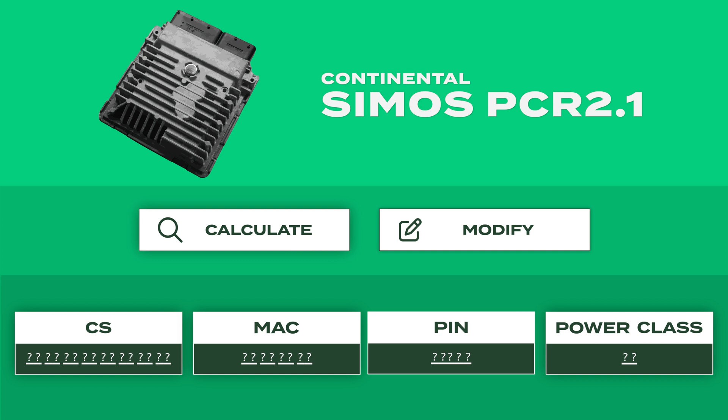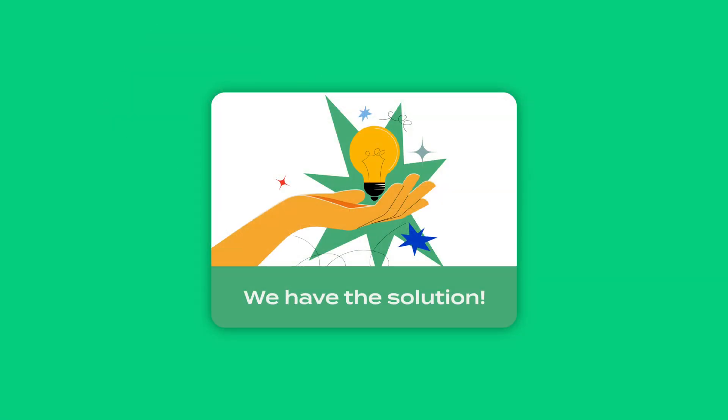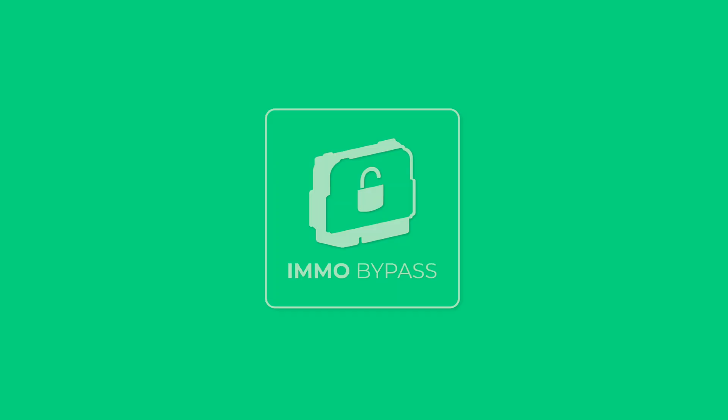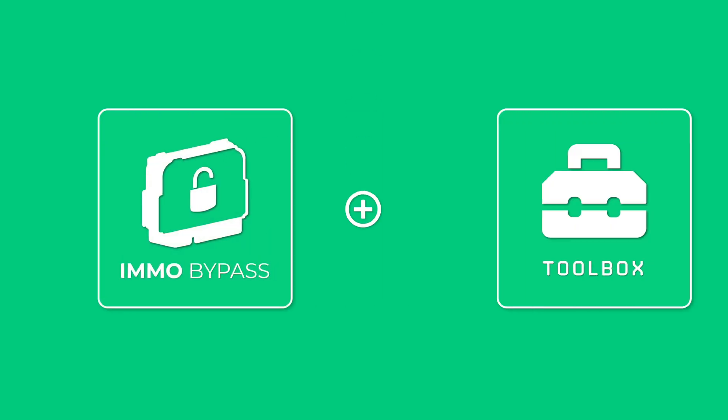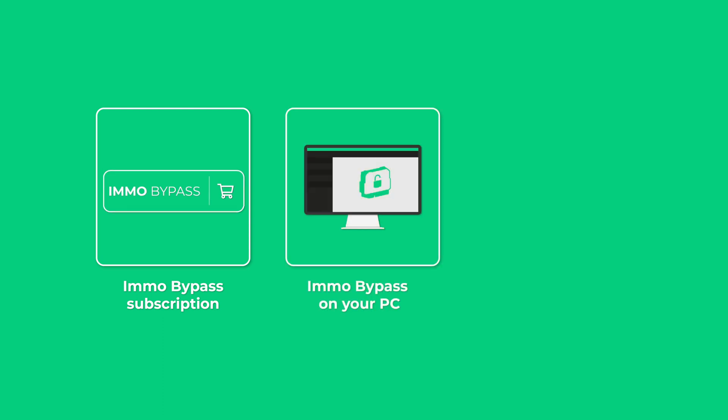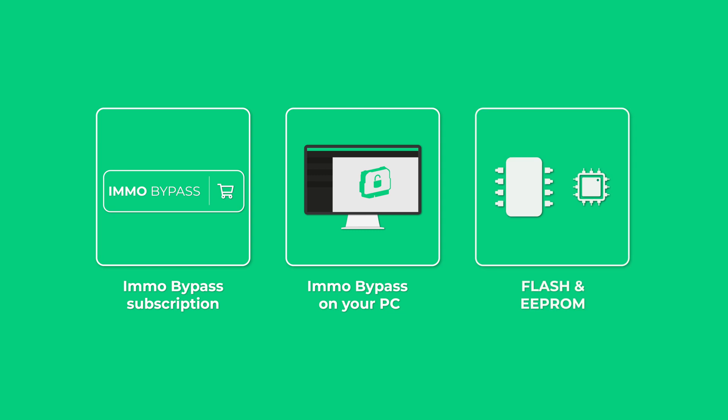With the latest addition to EMO Bypass Toolbox, the solution has never been easier. All you need is an EMO Bypass subscription, the PC version of EMO Bypass installed, and EEPROM and flash readouts from your ECU.